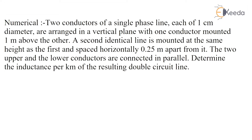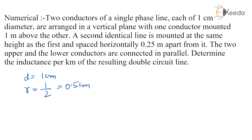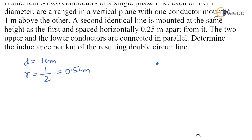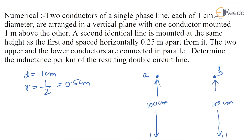So the question is: two conductors of a single-phase line, each of 1 cm diameter — so D is 1 cm, meaning R equals 0.5 cm. They are arranged in a vertical plane with one conductor mounted 1 m above the other, so conductor A and A' with a distance of 100 cm between them. A second identical line is mounted at the same height as the first, spaced horizontally 0.25 m apart, meaning the horizontal distance between them is 25 cm.